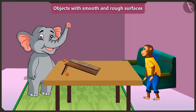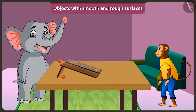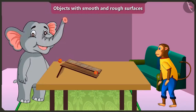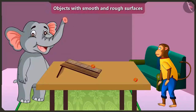Hey Appu, what are you doing here? Look Jaggu, I have two similar balls. When I roll them like this, the ball rolls down faster on this wooden slope, but on this other slope the ball rolls down slowly. Why is it so, Jaggu?